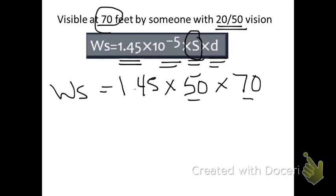So there's our stroke width. So right now, the stroke width, you take 1.45 times 50 times 70, and you come up with 5075.